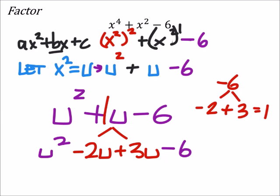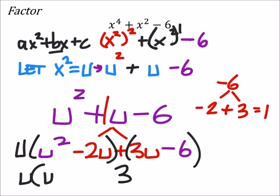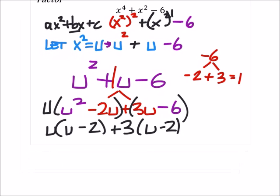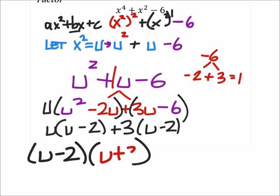So we're at the point where we need to factor by grouping. So in this first set right here, I'm going to factor out a u. And in the second set, I can factor out a three. So I've got u times u minus two plus three times u minus two. And that gives us the u minus two. And then in the other parentheses, the u plus three.